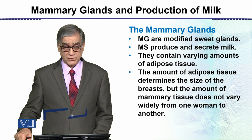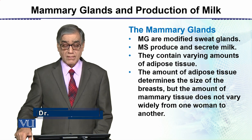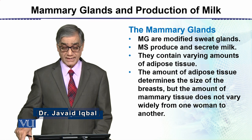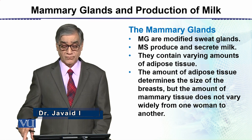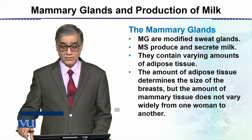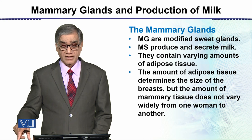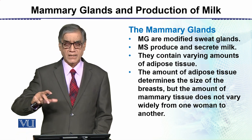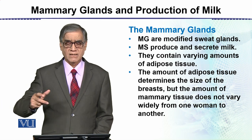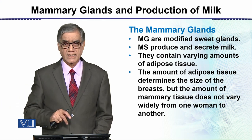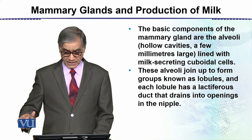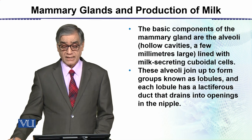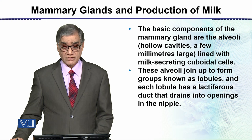The mammary glands contain varying amounts of adipose tissue. The amount of adipose tissue determines the size of the breasts, but the amount of mammary tissue does not vary widely from one woman to another. So the size of the mammary glands depends on the adipose tissue.